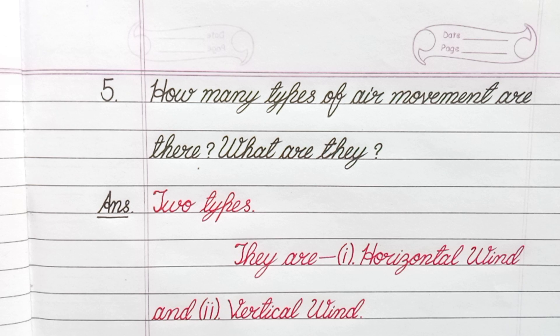Question number 5. How many types of air movement are there? What are they? Answer. Two types. They are horizontal wind and vertical wind.